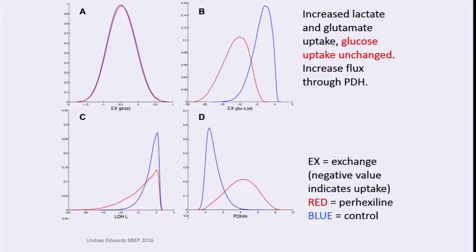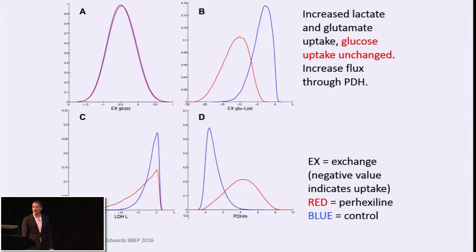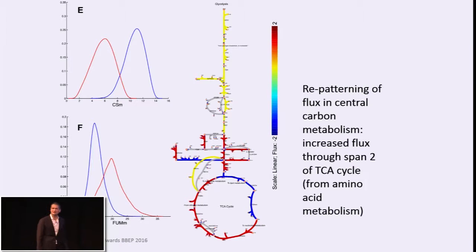These are specific examples from random sampling — these probability distributions. Glucose uptake was about the same. Glutamine uptake was stimulated. Lactate uptake was stimulated. And PDH activity was up. You can see that the two spans of the TCA cycle were differently regulated — and this takes you away from thinking of the TCA cycle as a simple cycle. It can be separated out into different bits.